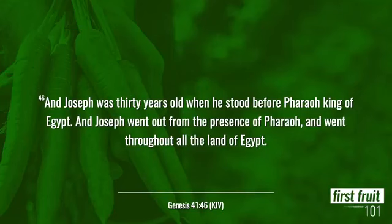So now as we're in verse 46, still in Genesis 41, look what happens. It says Joseph was 30 years old when he stood before Pharaoh, king of Egypt. Joseph went out from the presence of Pharaoh and he went throughout all the land of Egypt. Here's a man who two days before was stuck in jail, all he could do is roam the prison. But now he is roaming Egypt.